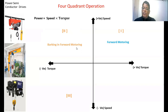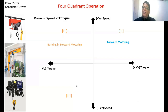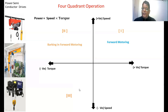In the third quadrant, both torque and speed are negative, so the power becomes positive. The machine is taking power from the supply, but the speed is negative, meaning the motor is rotating in the opposite direction to the first quadrant. Therefore, the third quadrant represents reverse motoring.